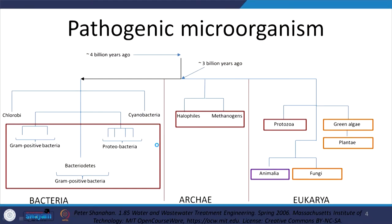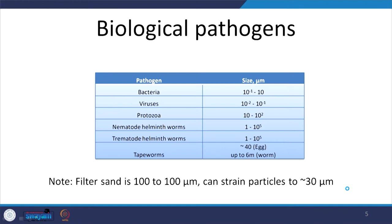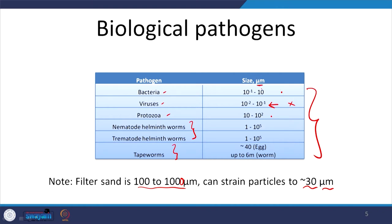We were talking about pathogenic microorganisms. The organisms we need to be concerned about include bacteria, archaea, and eukarya. In terms of sizes: bacteria, viruses — which are just RNA and therefore remarkably small — protozoa, and some kinds of worms. Filter sand is 100 to 1000 micrometers and can strain particles down to about 20–30 micrometers. So obviously we cannot remove viruses, but we can remove protozoa and sometimes some bacteria.